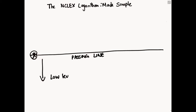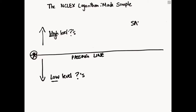We have low level questions and we have high level questions. A low level question would be a simple recall of a lab value, like the normal potassium is 3.5 to 5, whereas a high level question might have you make a decision based on an abnormal lab value. Above the passing line means safe for practice — a pass. Below the passing line means unsafe for practice — a fail.